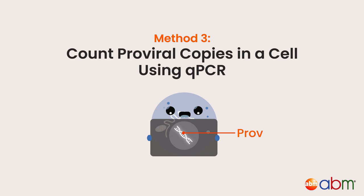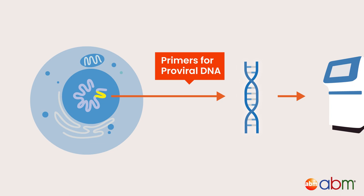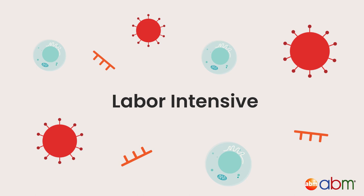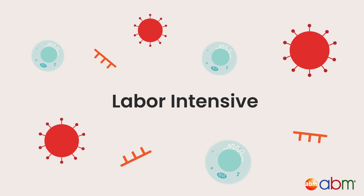Method three: count proviral copies in a cell using qPCR. Use qPCR to measure how many proviral copies have been incorporated into the target cell's genome. This method is quite labor intensive and involves isolating genomic DNA from transduced cells and generating primers for various viral components.